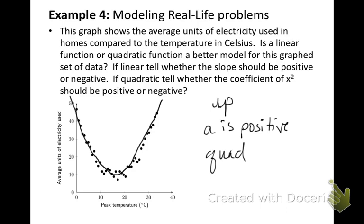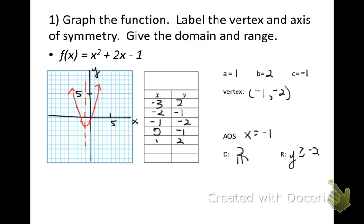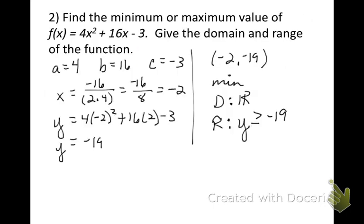Now we're at the independent practice — pause the video, do those practice problems, and come back to check your answers. Your graph, table, and values should look like the solution shown. For number 2, finding the minimum or maximum means finding the vertex: the x value is negative 2, the y value is negative 19. Because the a value is positive 4, it's opening up, so this is a minimum. The domain is all real numbers and the range is y greater than or equal to negative 19.